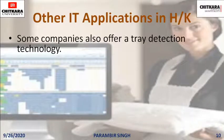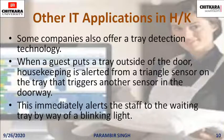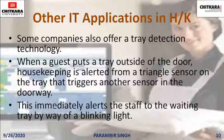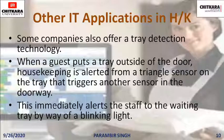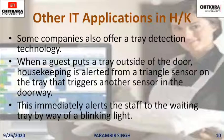Other IT applications in housekeeping: some companies offer tray detection technology. When a guest puts a tray outside the door, housekeeping is alerted via a triangle sensor on the tray that triggers another sensor in the doorway, immediately alerting staff by way of a blinking light. Room service trays are equipped with a sensor, and once the guest places the tray outside after consuming food, the sensor detects it in the corridor and alerts the department so they can clear the corridor easily.